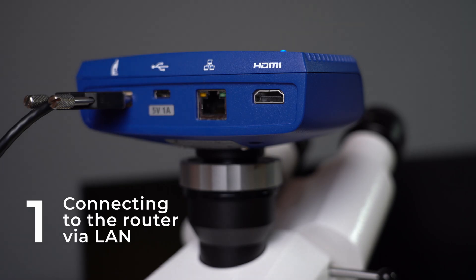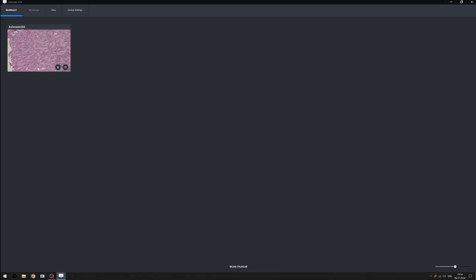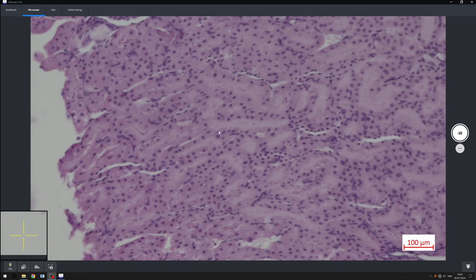Okay, here we have three options. The first and easiest way is to connect the camera to a Wi-Fi router using an Ethernet cable. The camera automatically appears in Labscope software if your computer or other devices are connected to the same Wi-Fi access point.